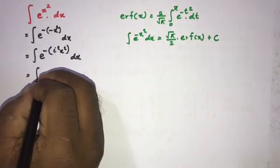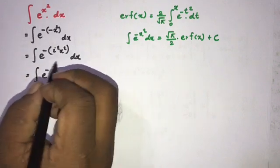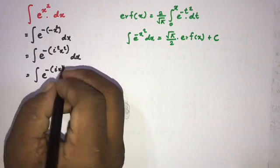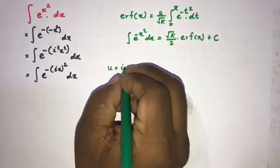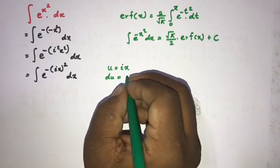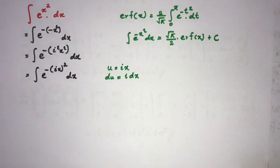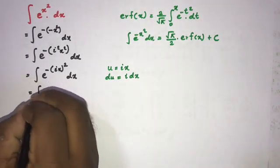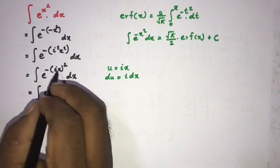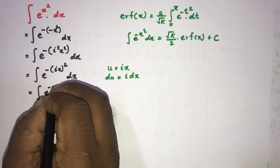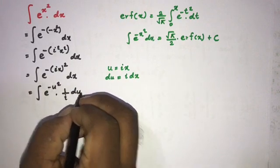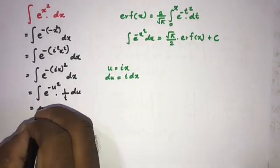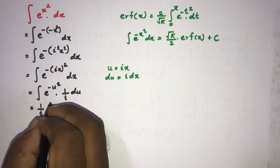We can write minus x squared as minus (ix) squared, since i squared equals minus 1. So the integral becomes the integral of e to the minus (ix) squared dx. Now we take the substitution u equals i times x, so du equals i times dx, meaning dx equals 1 over i times du.